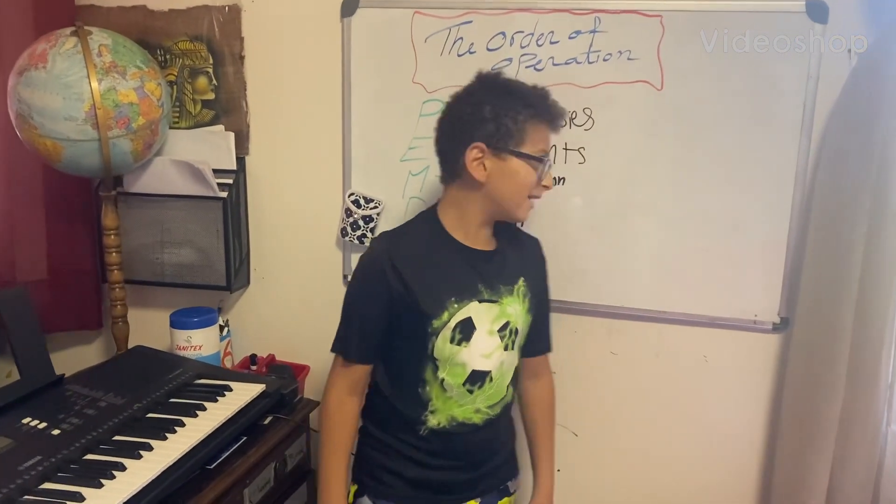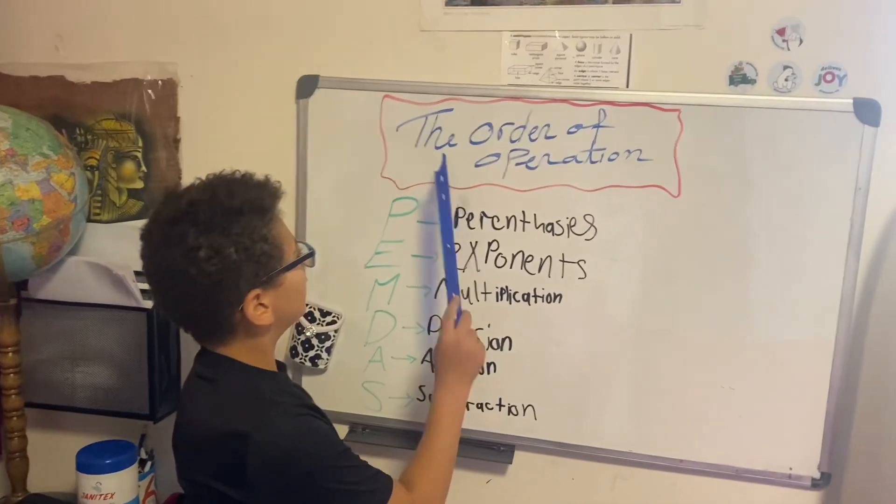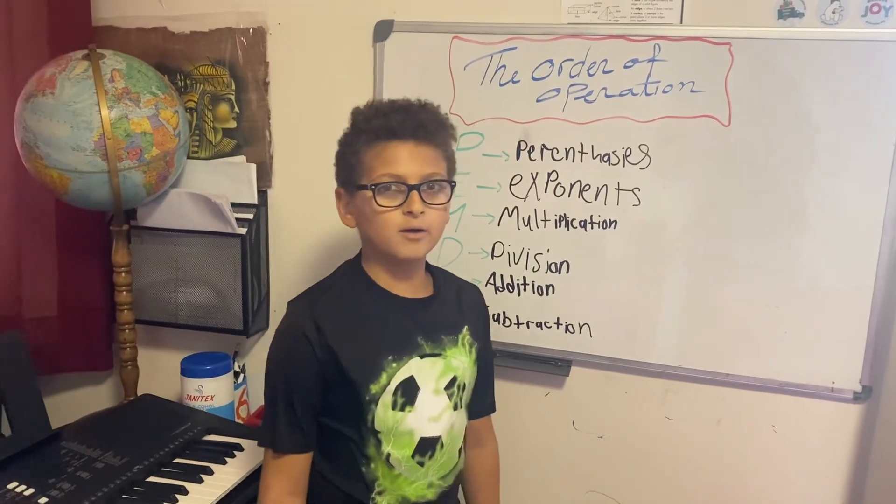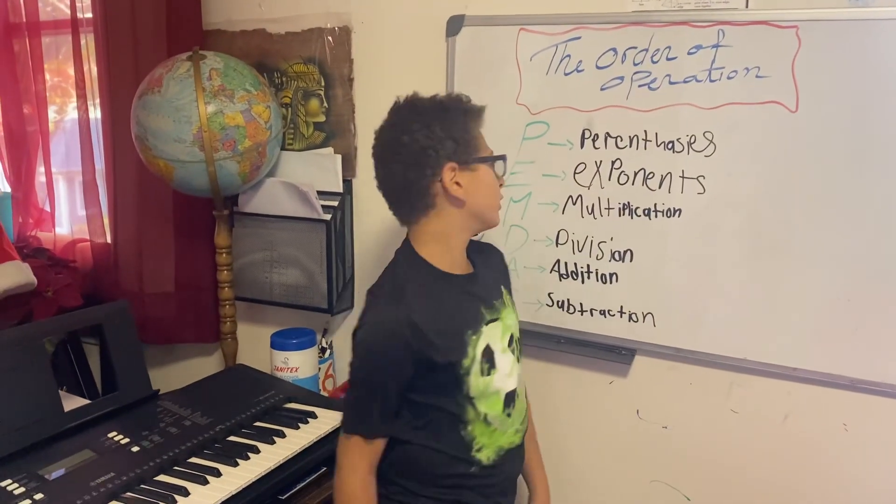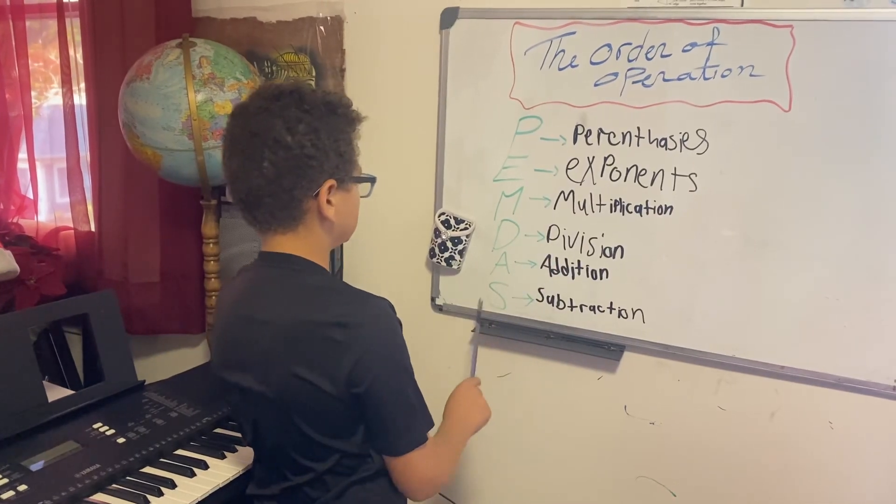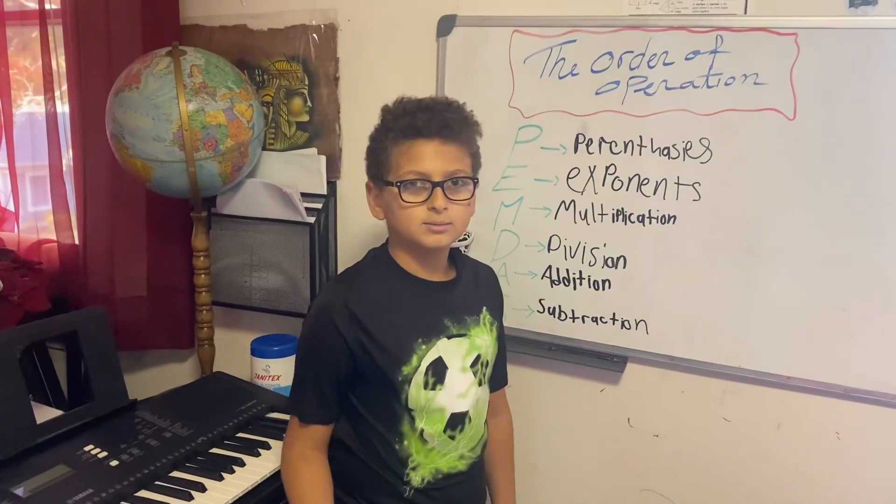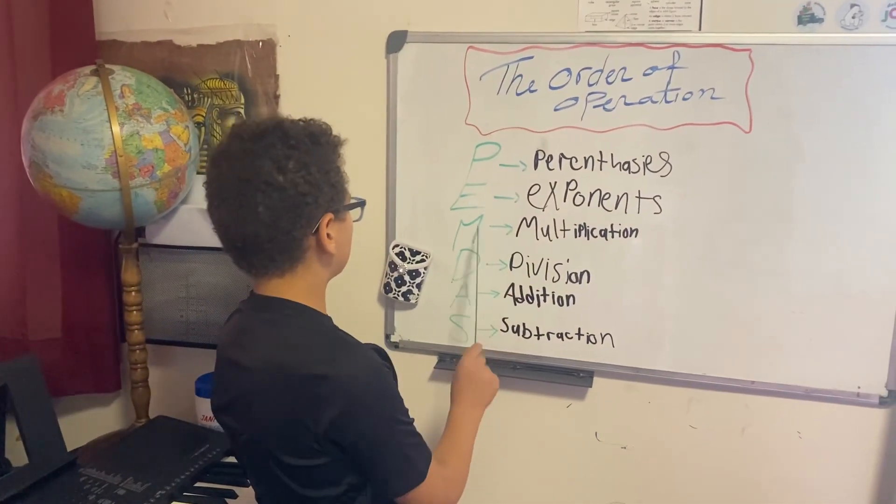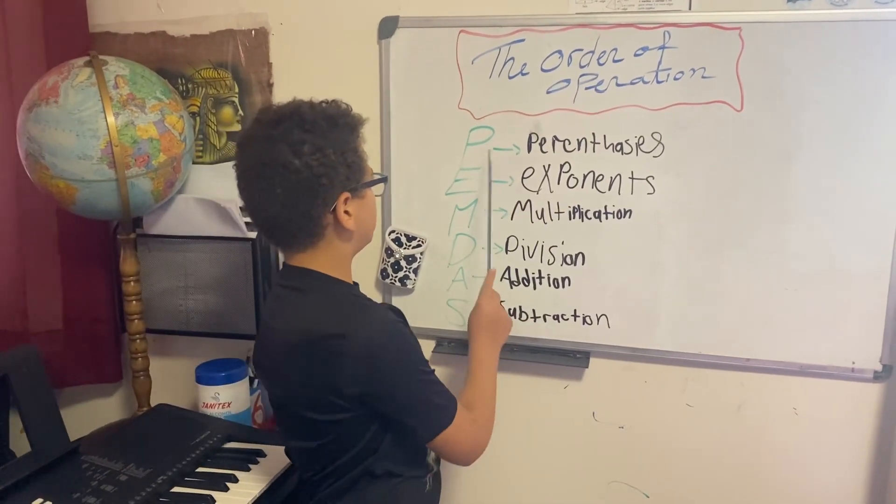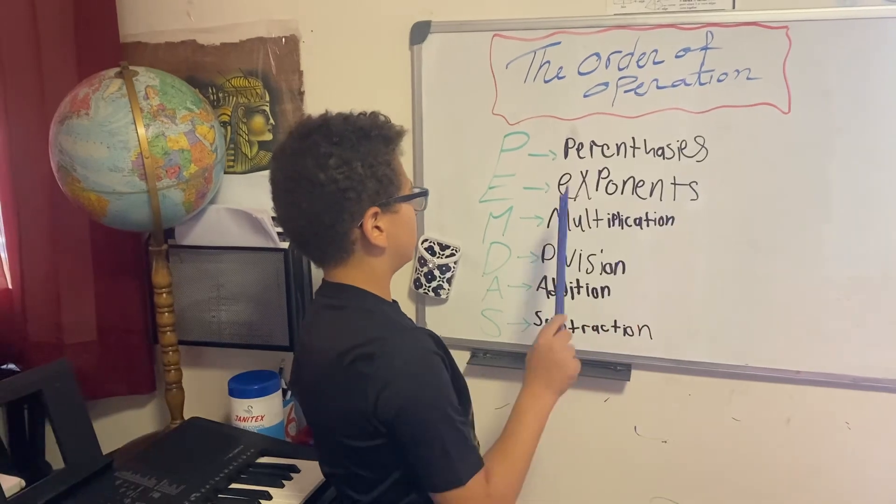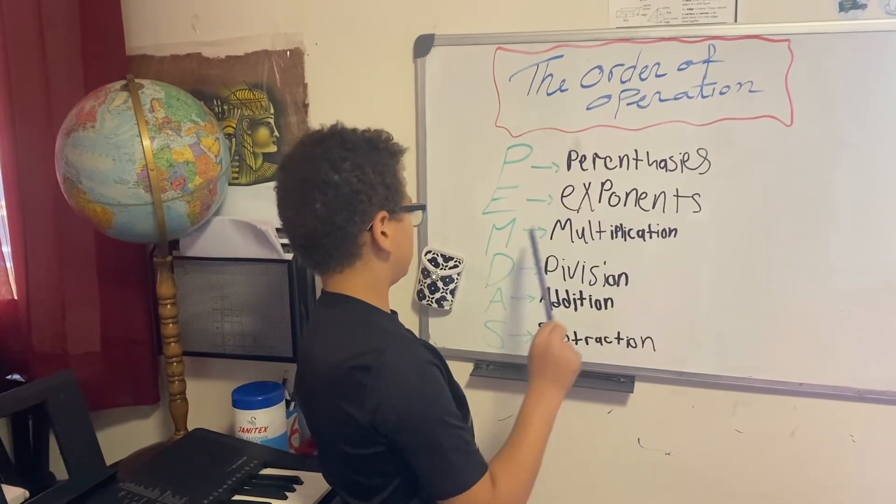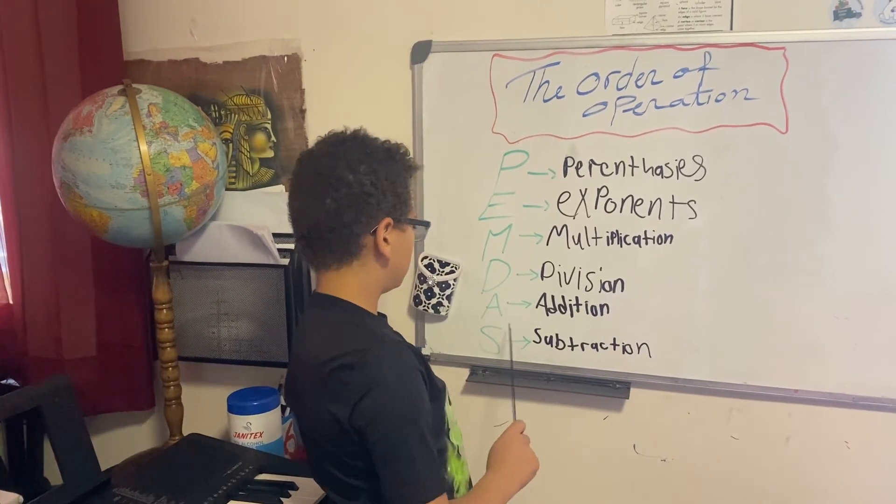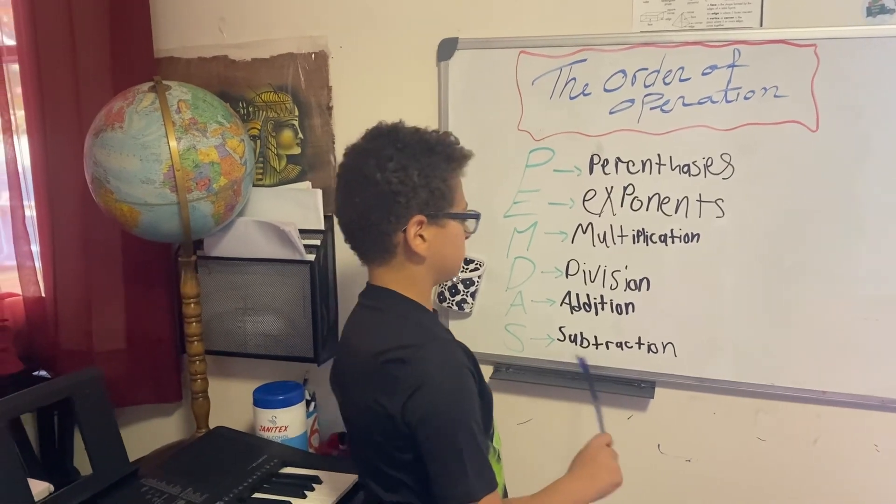Hello guys, today we'll be learning about the order of operations. The order of operations is just one simple word, and it's not really a word but it's a couple letters combined. Each letter stands for an operation. P stands for parentheses, E stands for exponents, M stands for multiplication, D for division, A for addition, and S for subtraction.